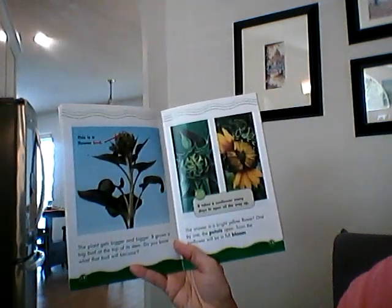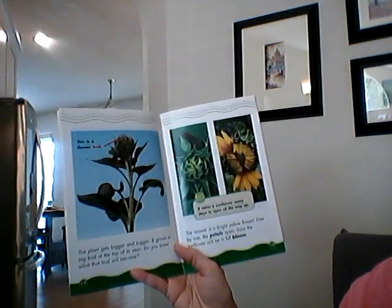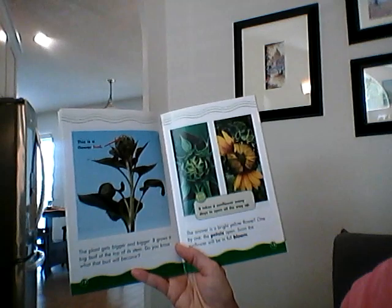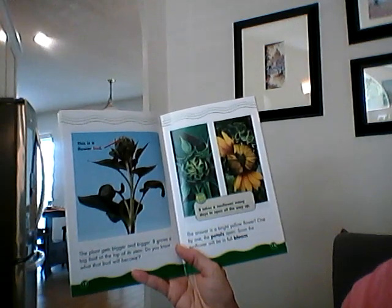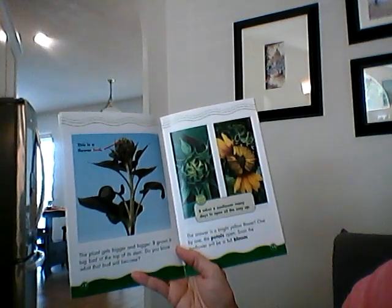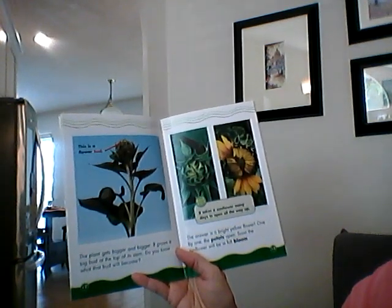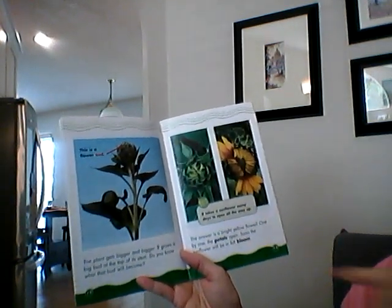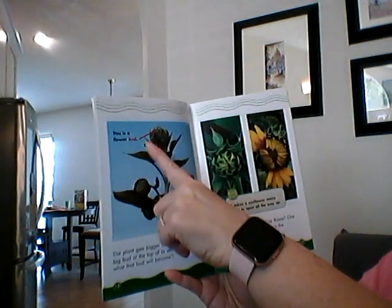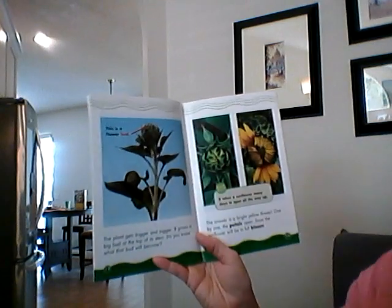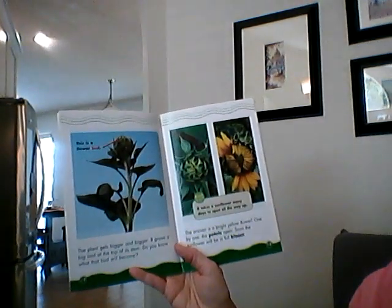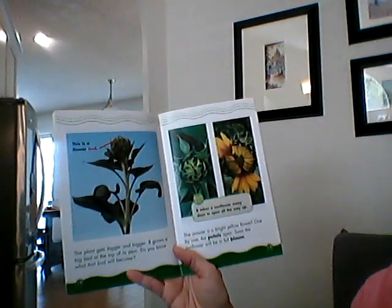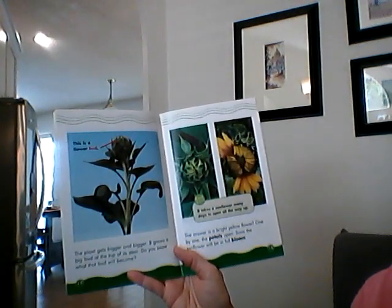The plant gets bigger and bigger. It grows a big bud at the top of its stem. Do you know what that bud will become? This is a flower bud. The answer is a bright yellow flower.